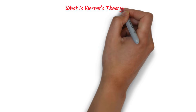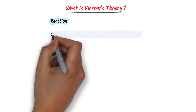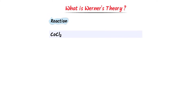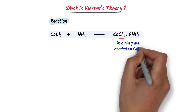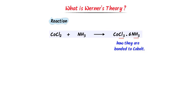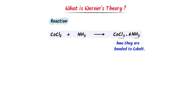Now, what is Werner's theory? Werner took cobalt chloride and reacted it with ammonia NH₃. As a result, he got cobalt chloride·6NH₃. He was interested to find out how these three chlorine atoms and six molecules of NH₃ are bonded to cobalt. To solve this mystery, he performed an experiment.